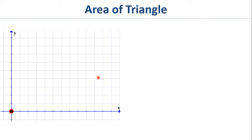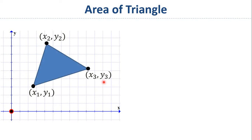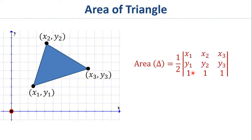So this is the xy plane. There are three points: x1 y1, x2 y2, x3 y3, and they will form a triangle. The area of this triangle is given by this formula, which is half of the determinant of this matrix: x1 y1 1, x2 y2 1, x3 y3 1.